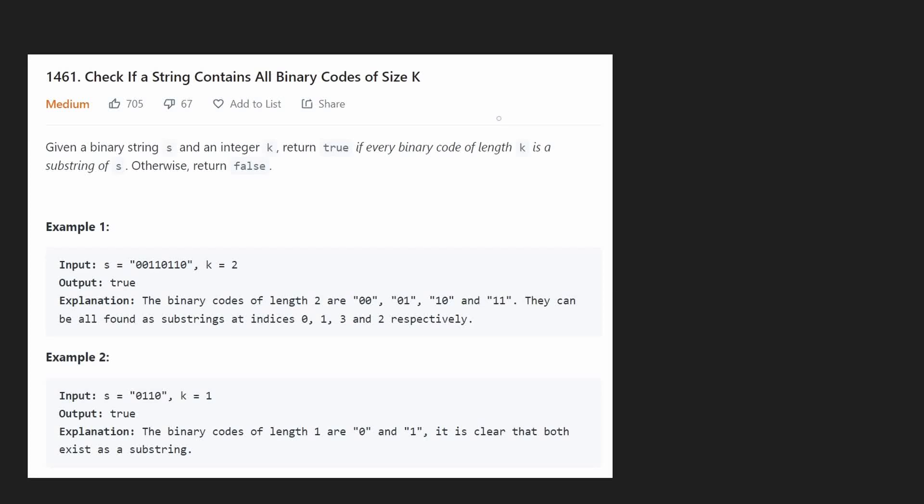Hey everyone, welcome back. It's been a while, but let's write some more neat code today. So today let's solve the problem: check if a string contains all binary codes of size k. We're given a binary string s, binary meaning that it's just made up of zeros and ones. We're given an integer k, for example 2, and we want to return true if every single binary code of length 2 in this case is a substring of s.